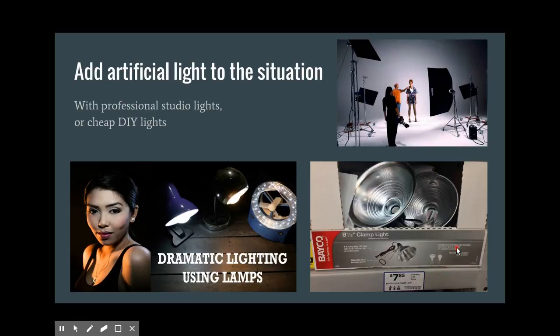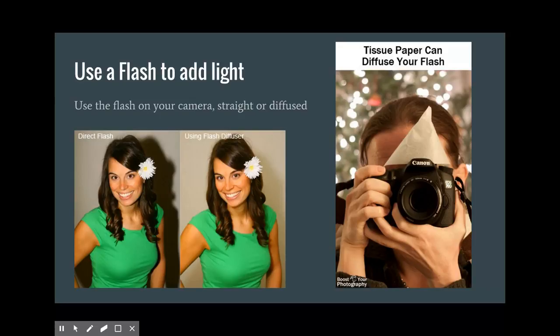For artificial light, you can get cheap lights from Home Depot or fancier professional ones. You can use flashes or strobes that just fire once, or continuous lights like tungsten hot lights. LED lights are really nice because you can control the color temperature better and they don't get physically hot, so it's not uncomfortable for your subject. You can even use LED bulbs with clamp lights as a cheap DIY solution.